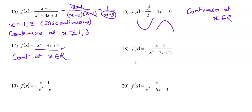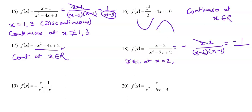Question number 18 is a rational function. Simplifying: the numerator is -(x-2) and the denominator factorizes as (x-2)(x-1). The common factor is (x-2), so it is discontinuous at x = 2 (removable). After cancellation we get -1/(x-1), giving infinite discontinuity at x = 1. So it is discontinuous at x = 2 and x = 1.